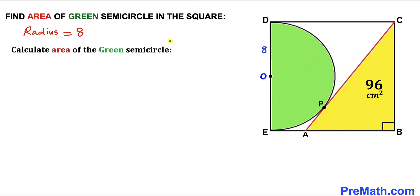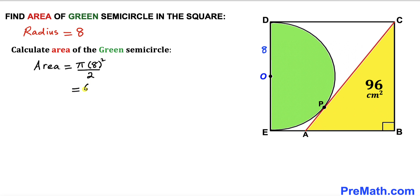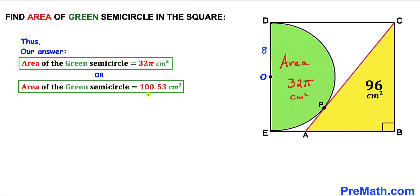Here's our final step: let's calculate the area of the green semicircle. Recall the area of a circle: Area = πr², where r is the radius. Our radius is 8, so the area of the semicircle is π × 8² ÷ 2 = 64π ÷ 2 = 32π. So the area of this green semicircle is 32π centimeter square, which is approximately 100.53 centimeter square.